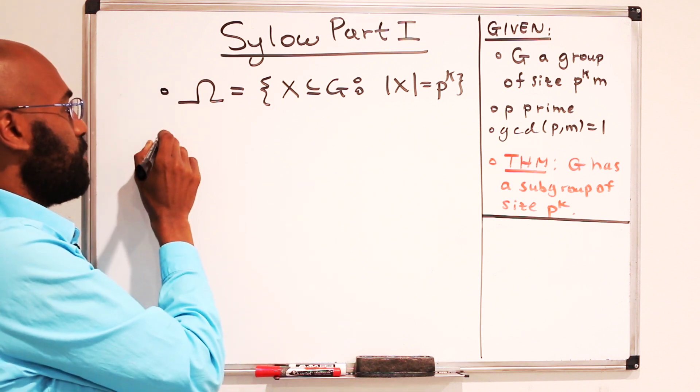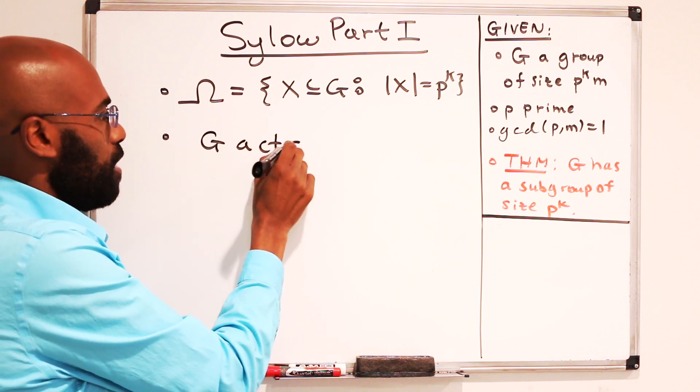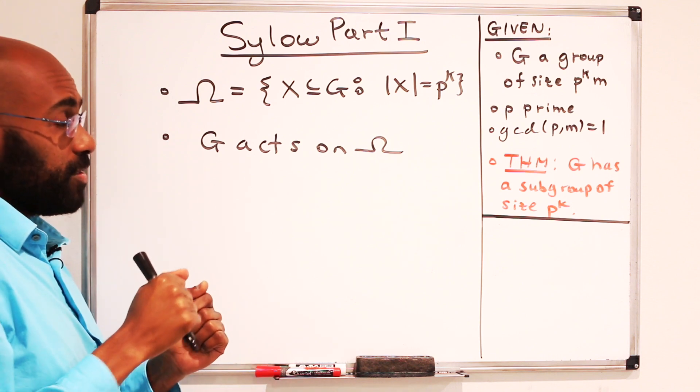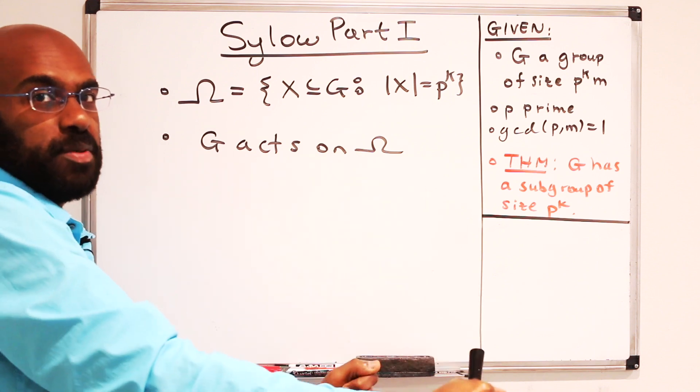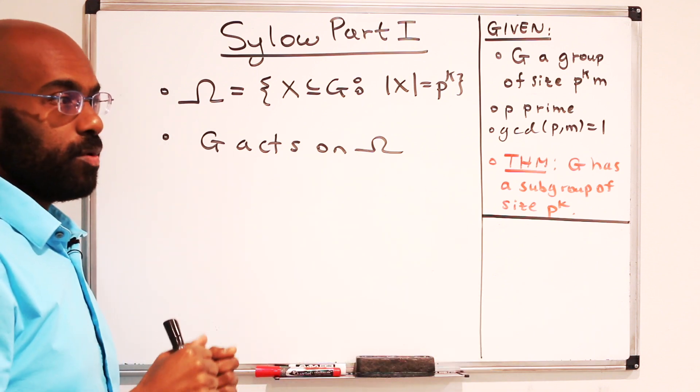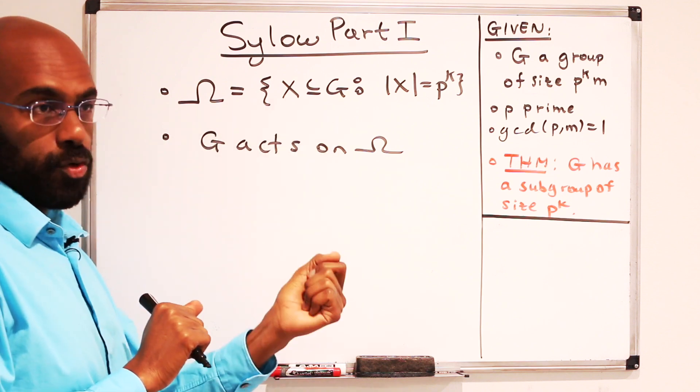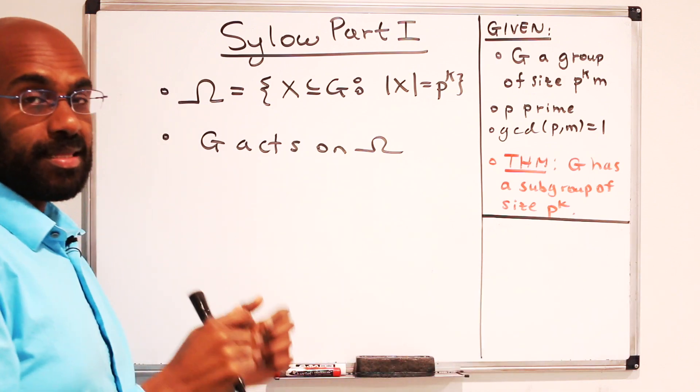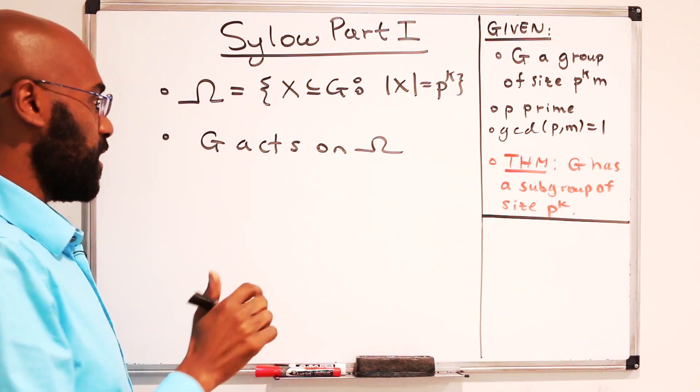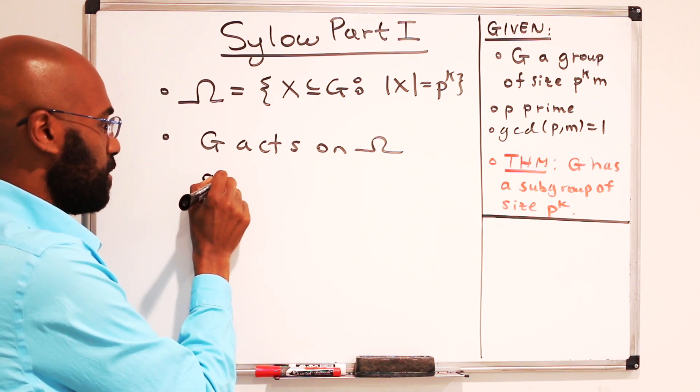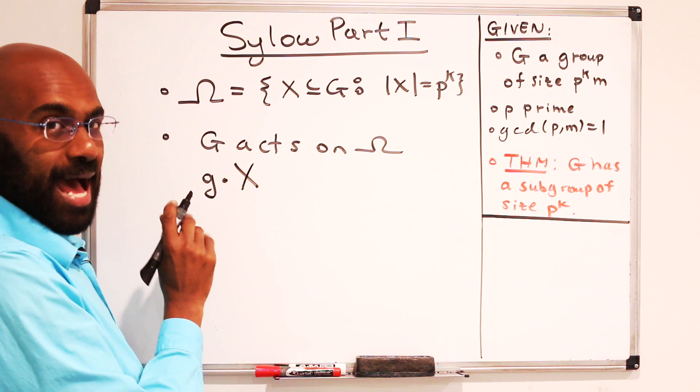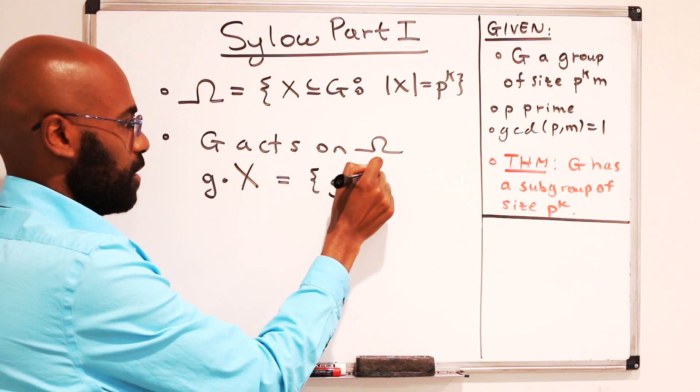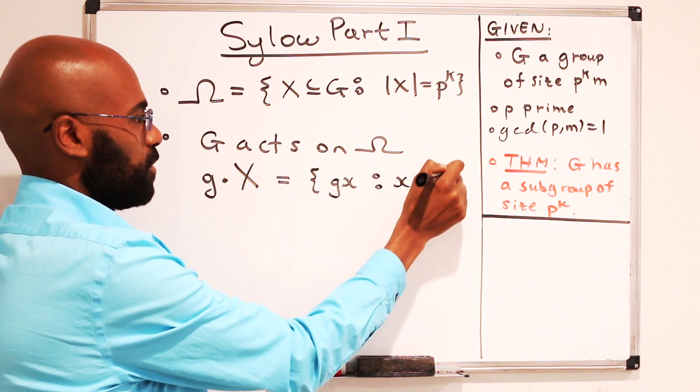And what we're going to do is construct an action on this particular set of subsets. And that action is going to give to light a subgroup of the size that we want. So the action is going to be the following. G acts on omega in the following way. That means that this action has to take subsets of size p to the k and produce subsets of size p to the k. Now one thing that you do in group theory that takes elements inside of a group, like a set of them, and produces a set of the same size is to let the elements act on the original set by multiplication. So our action is going to do that. It's going to take this particular set X and act on it by multiplication. So we're going to produce a new set, which is gx, taking over all the elements x in our particular big set X.